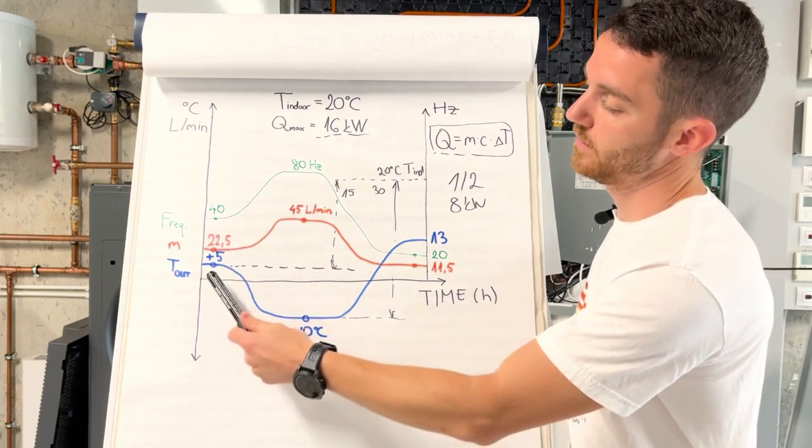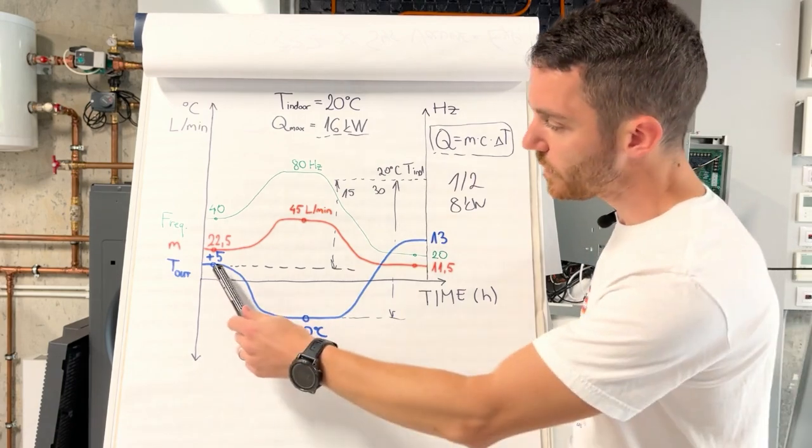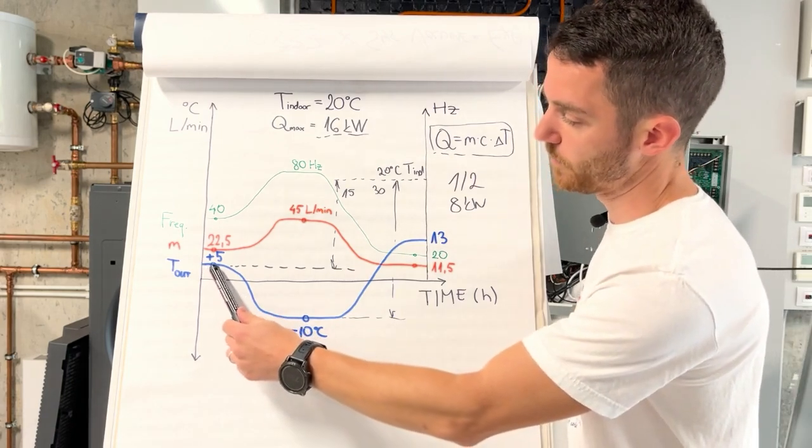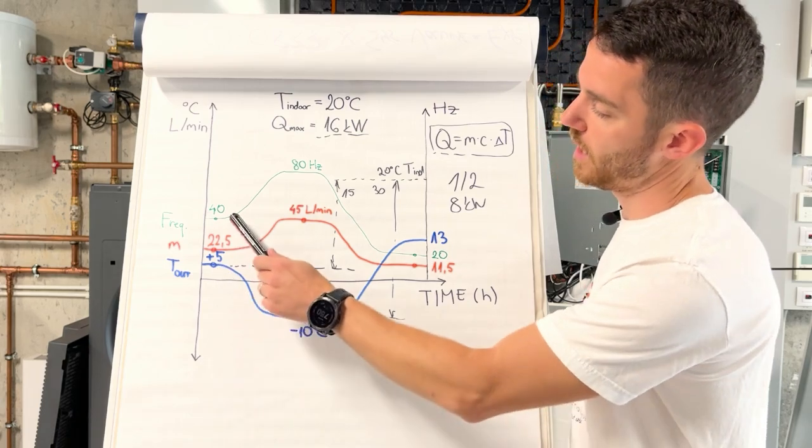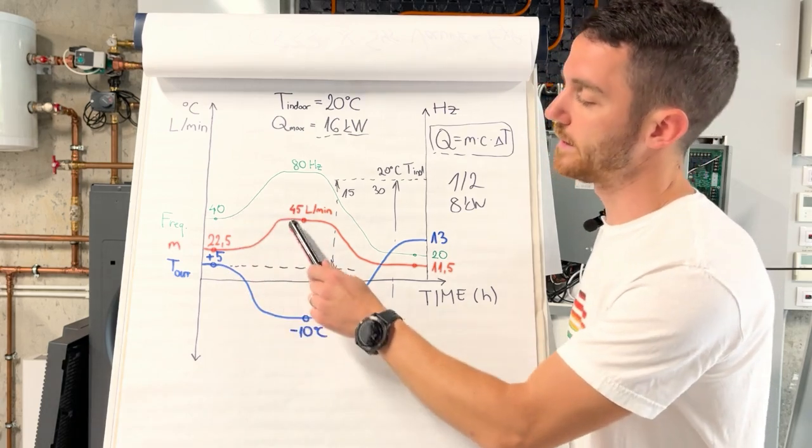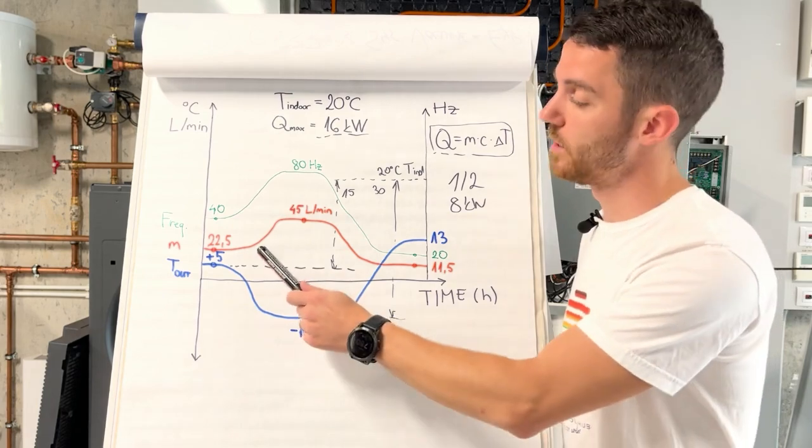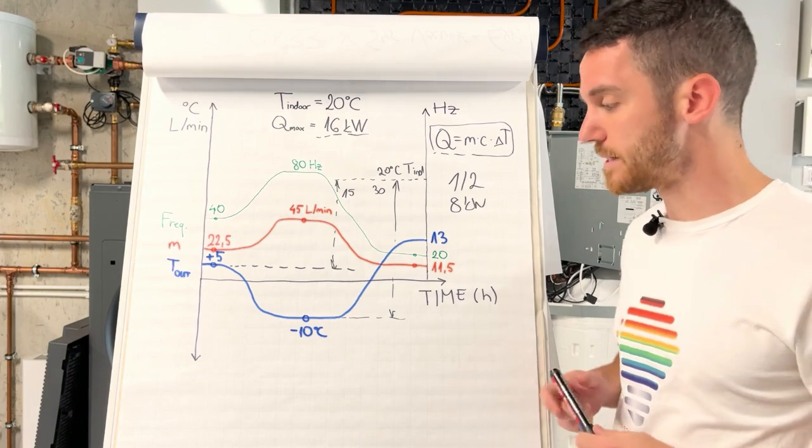But in normal operation, as frequency is rising, our flow rate is rising. And vice versa, as outer temperature is dropping, our frequency and our flow rate is rising because we need more kilowatts, more heating capacity.